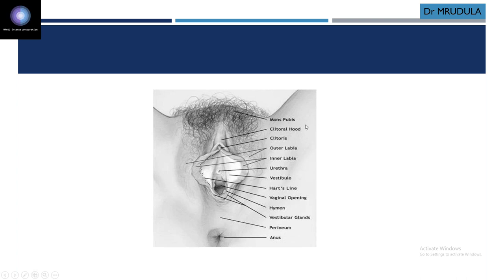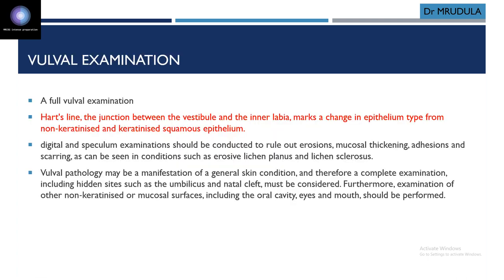These are the typical parts of the external genitalia: mons pubis, clitoris, clitoral hood, outer and inner labia — that is labia majora and labia minora — Hart's line which differentiates between keratinized and non-keratinized epithelium, then urethra, vestibule, hymen, and vaginal opening. This is the basic anatomy to identify exactly where the lesion is located.